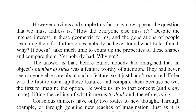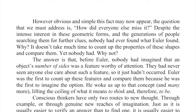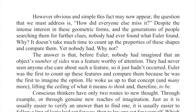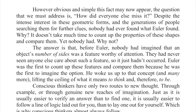However obvious and simple this fact may now appear, the question we must address is: how did everyone else miss it? Despite the intense interest in these geometric forms, and the generations of people searching them for further clues, nobody had ever found what Euler found. Why? It doesn't take much time to count up the properties of these shapes and compare them, yet nobody had. Why not?